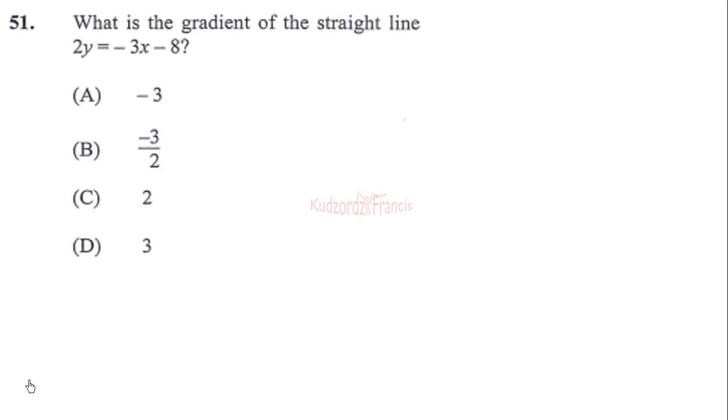We are on the 51st question: what is the gradient of the straight line 2y equals negative 3x minus 8? To find the gradient, we need to rewrite the given equation in the form y equals mx plus c, where m is the slope and c is the y-intercept.